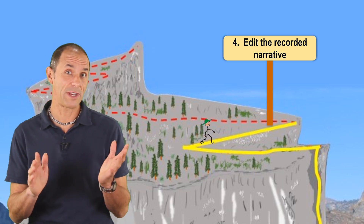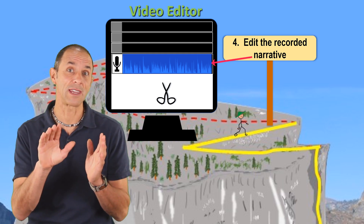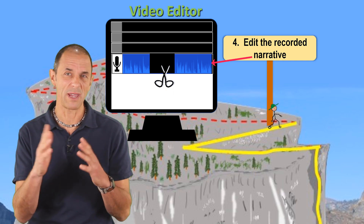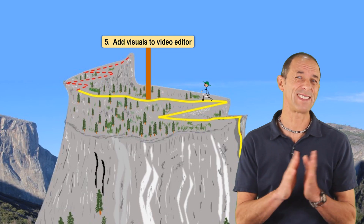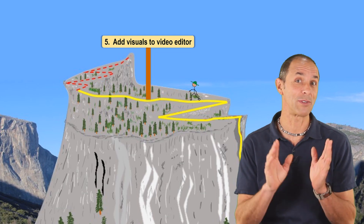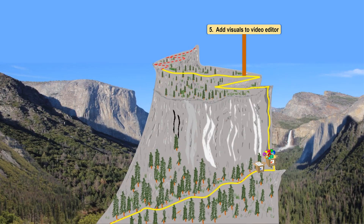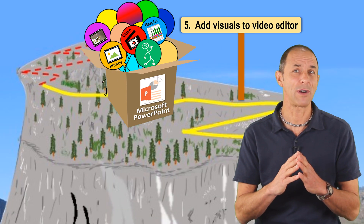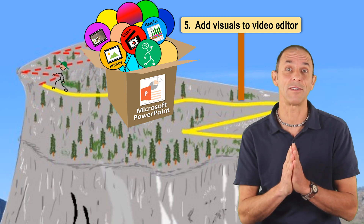Step four begins the actual video editing process. This is where I put that recorded narrative onto a track in my video editor program and cut out the parts I don't need — where I made mistakes and things like that. Then I move on to step five, which is a really fun step, because this is where I take all those visuals and put them in with the narrative. To help with this, I look back at the PowerPoint file where I've stored all my visual ideas, and I'll remember, 'Oh yeah, there's that cool photograph or illustration — let me add that to this part of the narrative.'